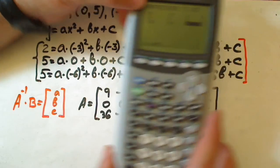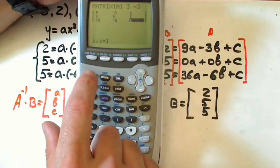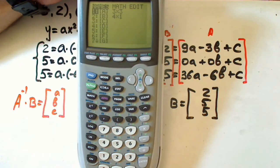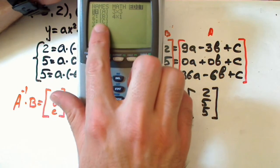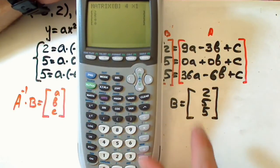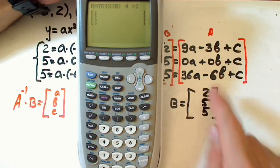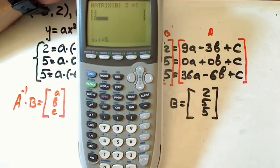Now matrix b. We just second, matrix, go to edit, go to matrix b, enter. Now our matrix is three rows, one column, three enter, one column enter. Our values: two, five, five.